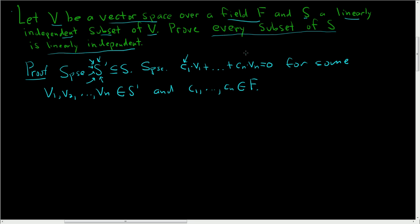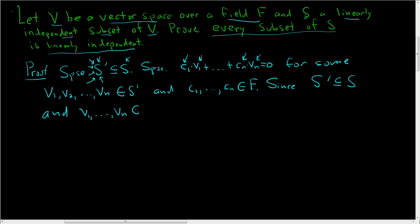We have to show that all of the Cᵢ's are zero. Here's the trick: S prime is a subset of S, so all of the Vᵢ's, since they're in S prime, they're also in S. But S is independent, so all of the Cᵢ's must be zero by definition of independence.